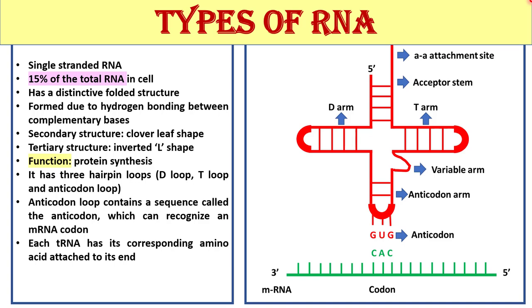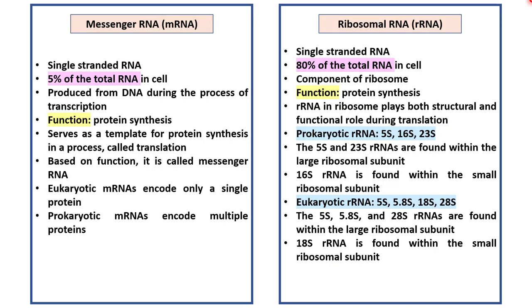So there are different types of RNA in our cell. We will discuss about them one by one. First is messenger RNA or mRNA. mRNA is a single-stranded RNA. It accounts for just 5% of the total RNA in the cell. mRNA is produced from DNA during the process of transcription.